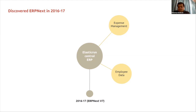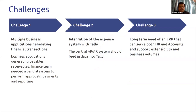We evaluated ERPNext and Frappe and found it very impressive. We decided to start with a few use cases — expense management and employee data — and worked on version 7 for a year. Finally, we decided we wanted to keep Elastic Run working on ERPNext for our corporate ERP. These were some of the challenges we had.